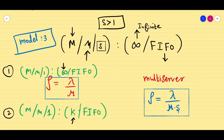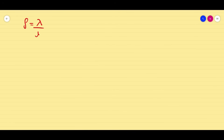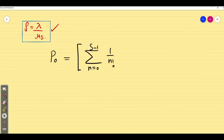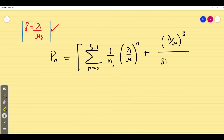So with this, let us go into the formulas one by one. Rho equals lambda by mu·s. Now for P₀: P₀ equals the inverse of the quantity — summation from n equals 0 to s minus 1 of (1/n!)·(lambda/mu)ⁿ, plus (lambda/mu)ˢ divided by s! times (1 minus lambda/mu·s), all to the power of minus 1.